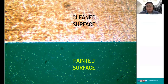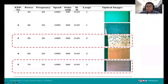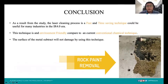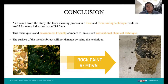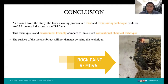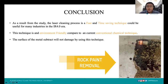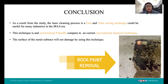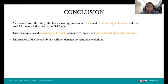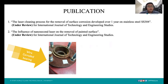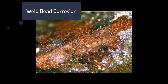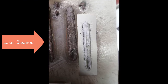The best parameter for coating removal is 70% power with three marking loops. As a conclusion, the laser cleaning process is a fast and time-saving technique useful for many industrial applications through the era of industrial revolution 4.0. This technique is environment friendly compared to conventional chemical techniques, and the surface of the metal substrate will no longer be damaged using this new technology. Additionally, we have published two papers on this topic; the first is published and the second is still under review for the International Journal of Technology and Engineering Studies. Thank you very much.